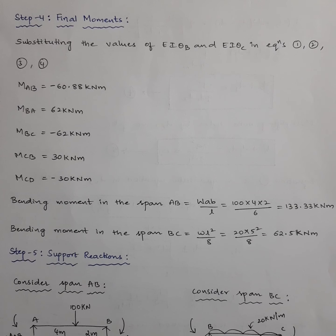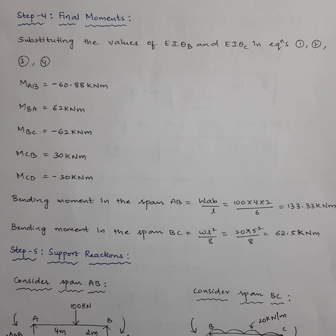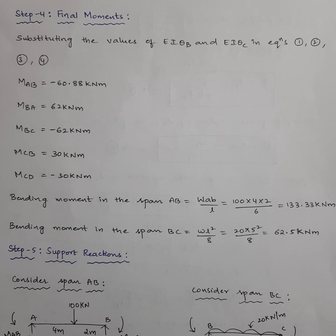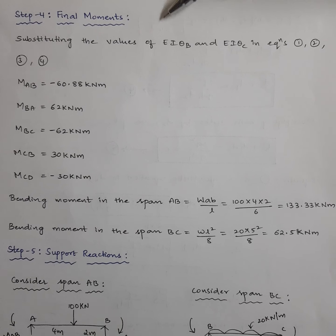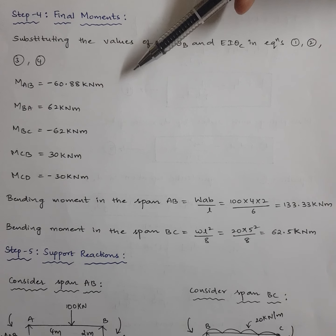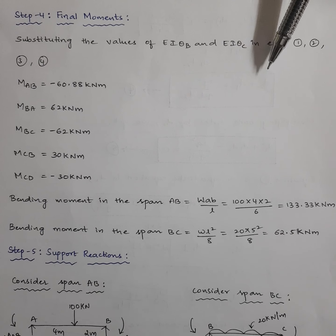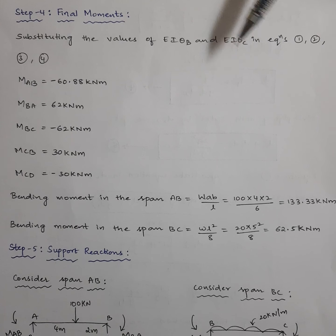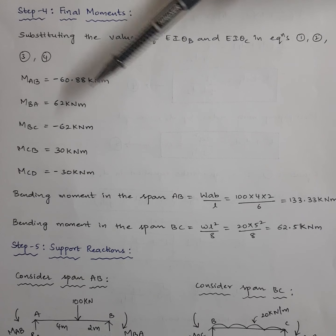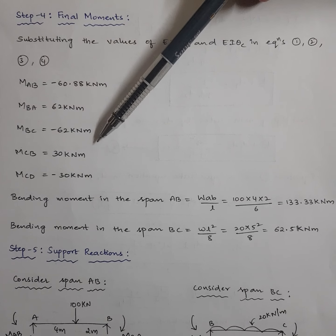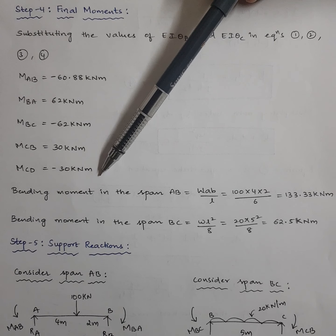After getting the slope values, substitute them back into equations 1 through 4 to get the final moments — that is Step 4. Substituting EIθB, EIθC, and the E and I values into all four equations gives: M_AB = minus 60.88, M_BA = 62, M_BC = minus 62, M_CB = 30, and M_CD = minus 30 kN·m.